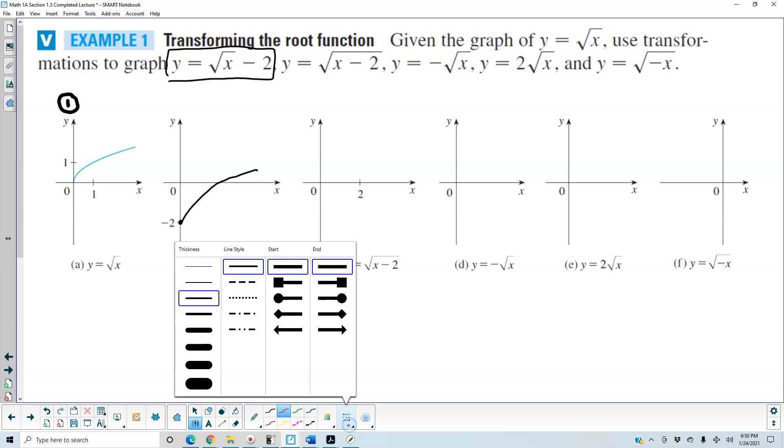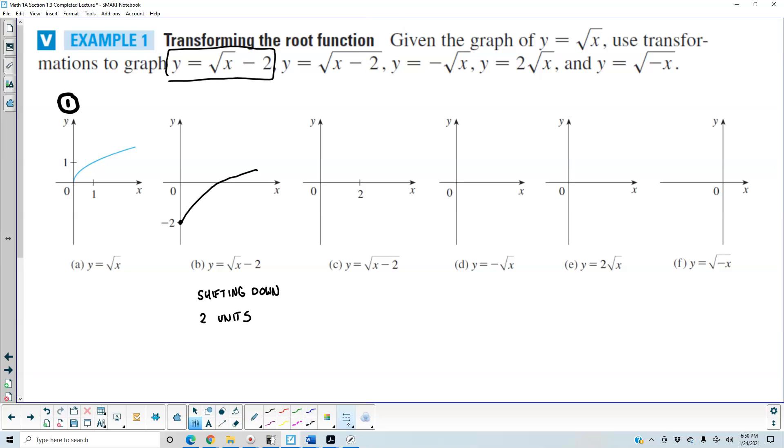Okay next, if we get y is equal to the square root of x minus 2, that means we need to take x minus 2, set it equal to zero, and therefore x is equal to two. That means we're shifting two units to the right.